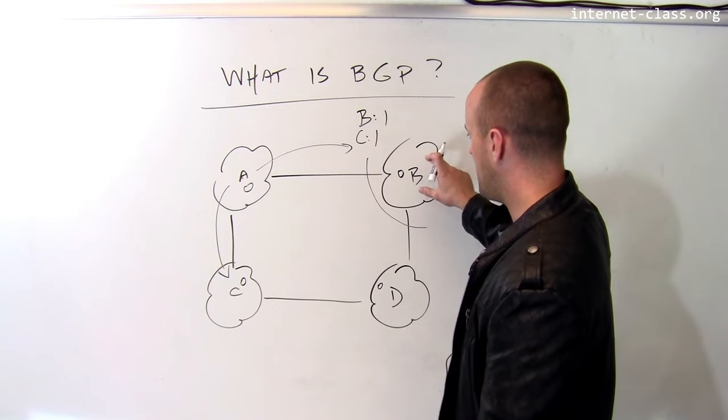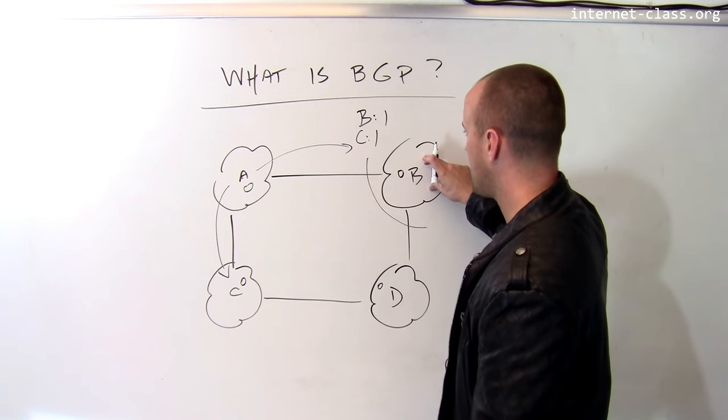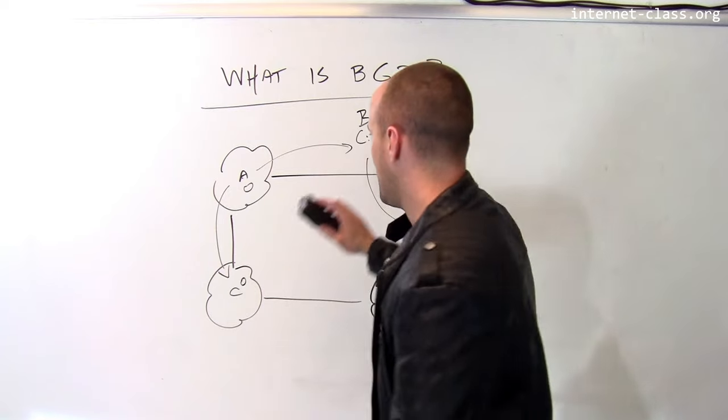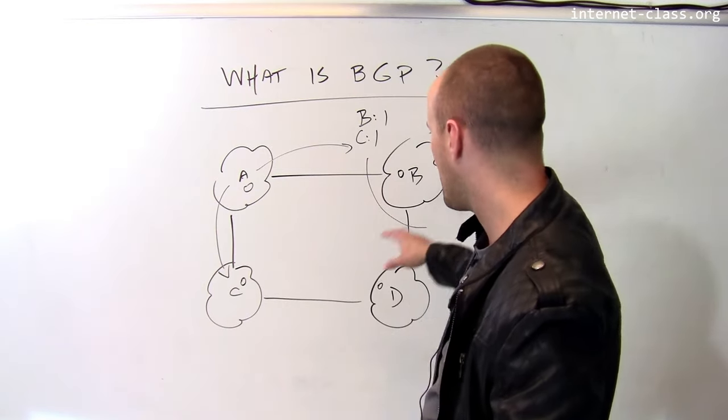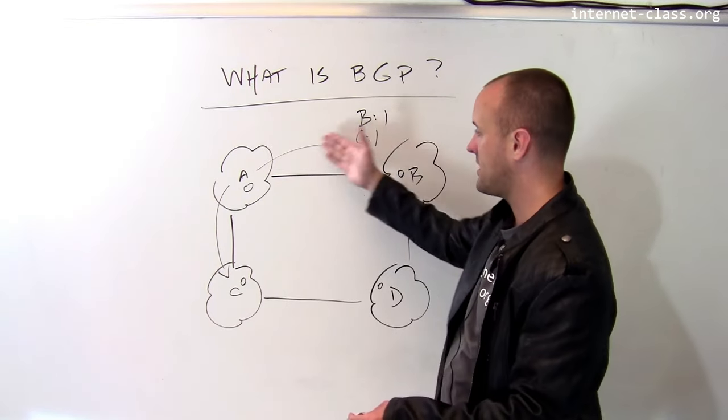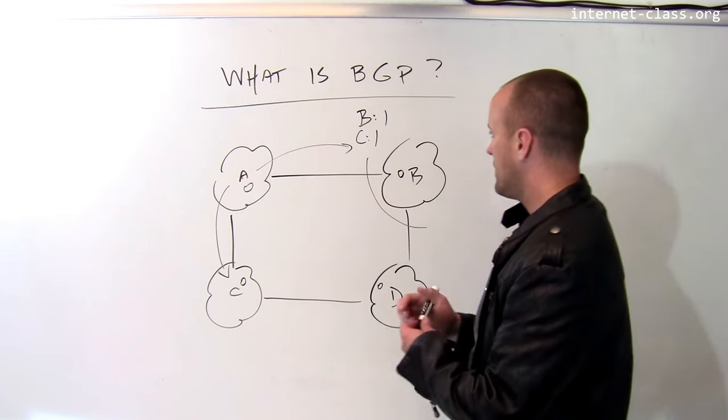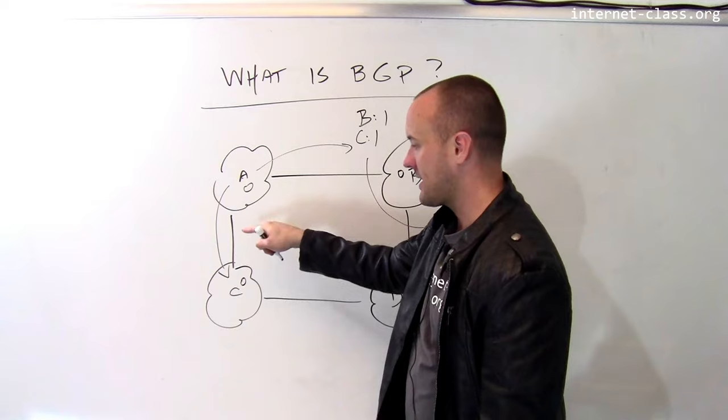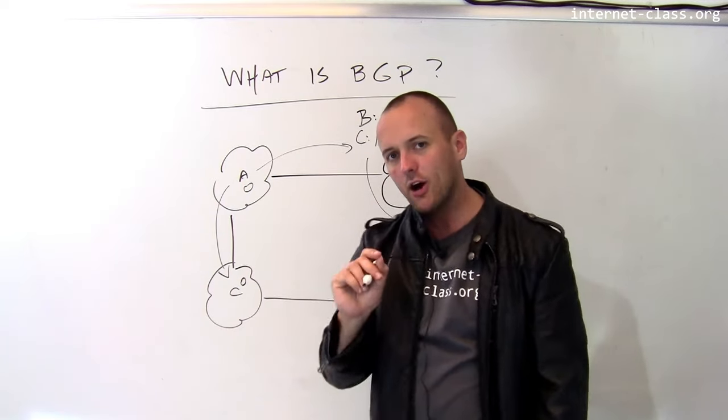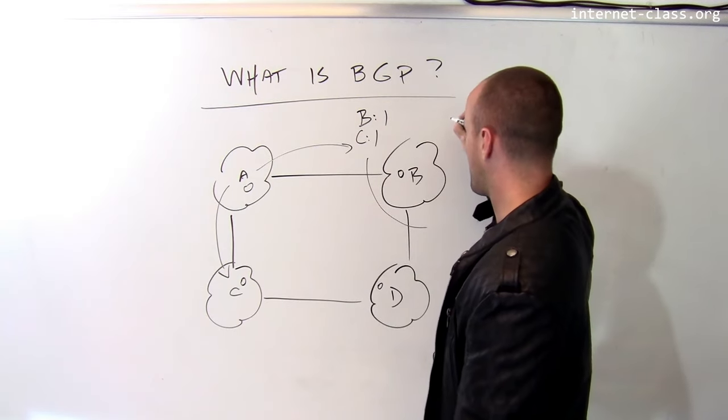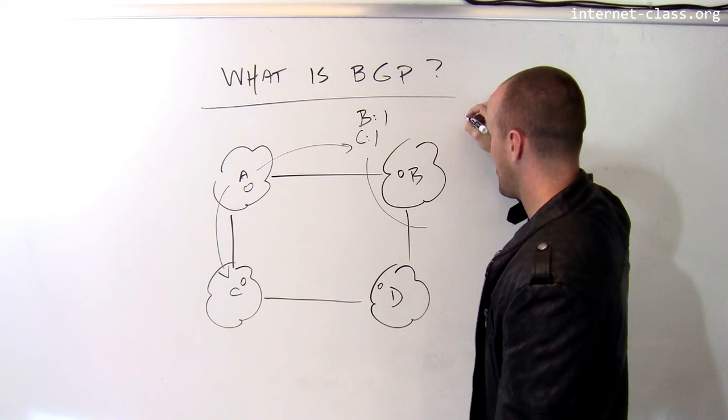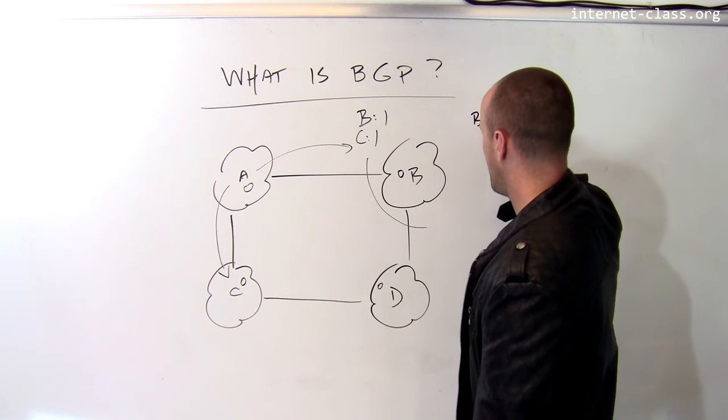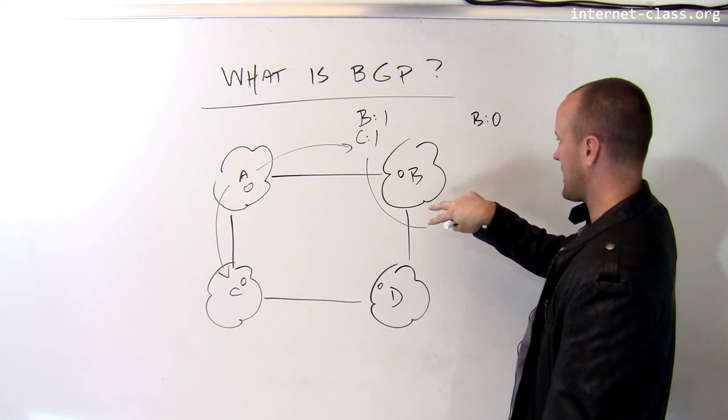Now once B receives this message, the first thing it says is, well, I'm directly connected to A, and so that's not interesting to me. I know how to get packets to myself. I don't need to send a packet that's destined for my own network to A. But it does say, oh, this is interesting. I'm not directly connected to C, but now I know how to get a packet to C. So if I want to send a packet to C, it maintains a table that says, I know how to get packets to B, that's myself. I have a zero-hop link, so internally I'm going to route things.